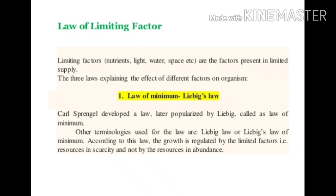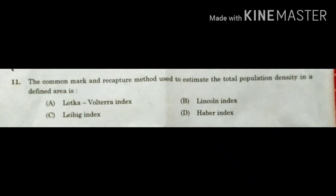For example, consider the growth of a population. The growth is determined by the availability of nutrients, oxygen, and climatic factors. If a lot of nutrients and abundant oxygen are available but the climatic condition is limited, then the growth and development of the population will not take place properly, because that lowest factor — the climatic factor — is the limiting factor according to Liebig's law.